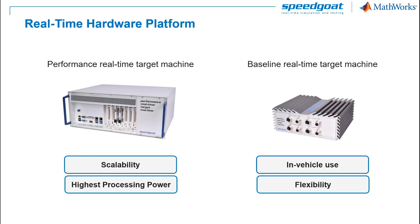If you are looking for a smaller platform, you should consider the Baseline real-time target machine. This system can be equipped with a fair number of IO channels. It's ideal for use in the field, but it fits well on a desk too.